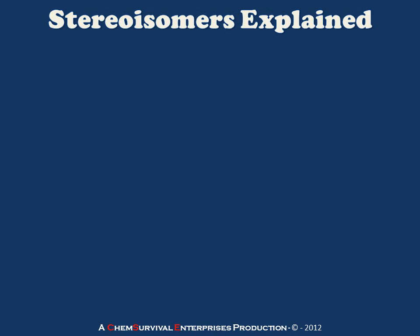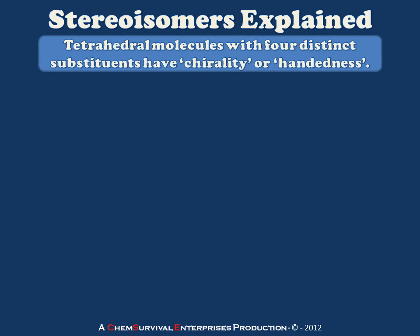Hi folks, it's Professor Davis again. This time here to explain the basics of stereoisomers. I'm going to begin by pointing out that tetrahedral molecules which have four distinct substituents have something we call chirality in chemistry, which is really just a fancy word for handedness.